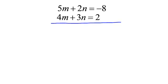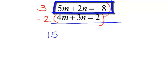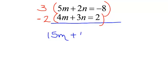If I want to get the n's, a 6 and a negative 6, I'm going to multiply the top equation, all of it, both sides, by 3, because 3 times 2 will give me 6. And if I want the second equation to be negative 6, I'm going to multiply it times a negative 2. The first equation, 3 times everything: 3 times 5m is 15m, 3 times 2n is 6n, and 3 times negative 8 is negative 24.